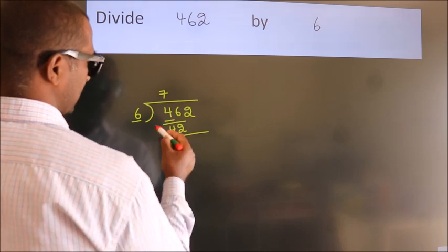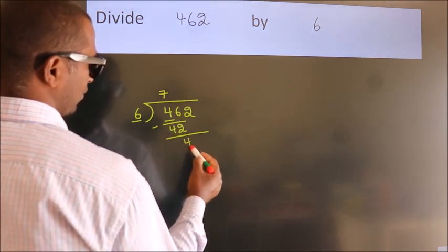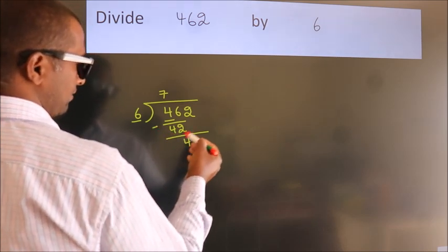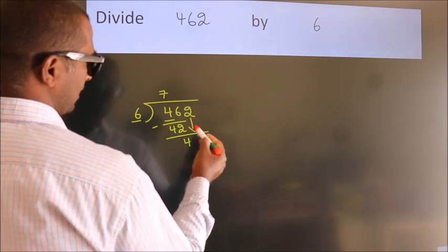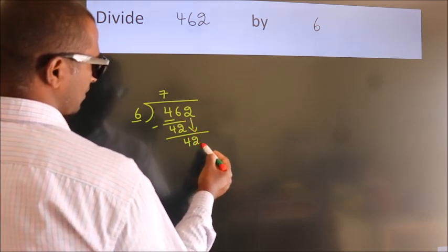Now we should subtract. We get 4. After this bring down the beside number. So 2 down. So 42.